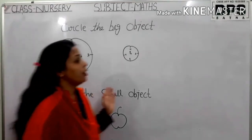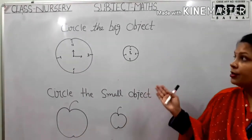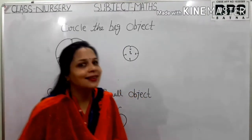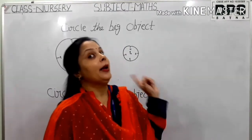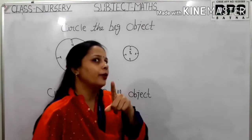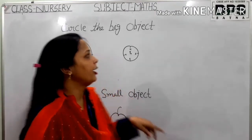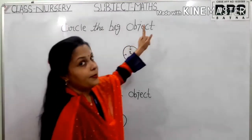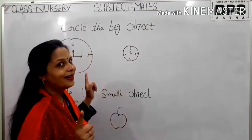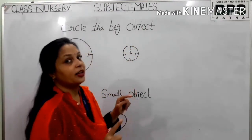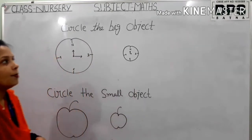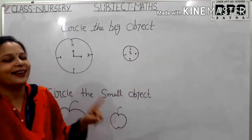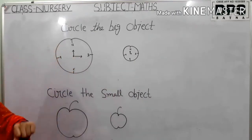So now children, look here. I have made some objects for you. What do you have to do? So easy — you have to circle. But in which one? Ma'am will read the question, then you will do it. Circle the big object — means in which one do you circle? The big object.